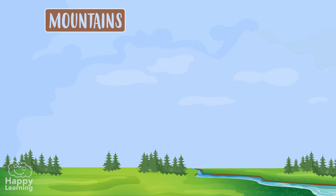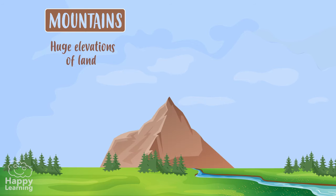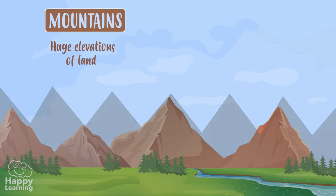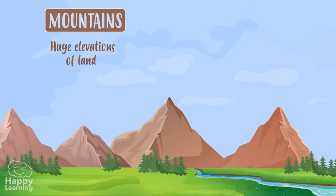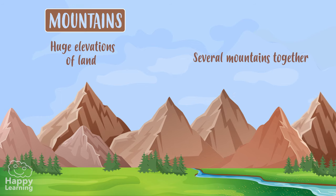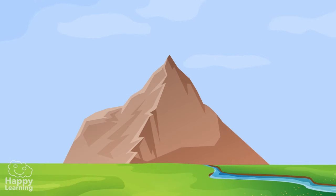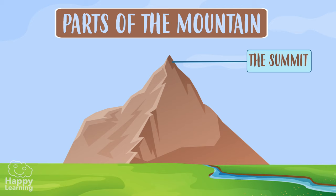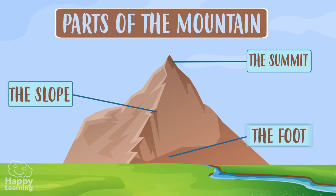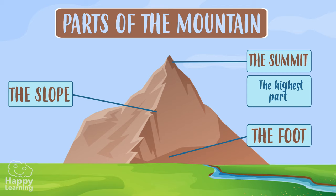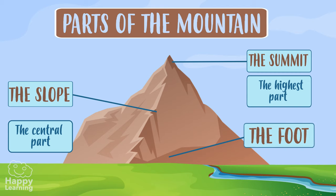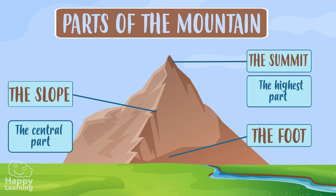We all know that mountains are huge elevations of land and they look rather like a saw, don't you think? Several mountains together form a mountain range. Mountains have three parts: the summit, the slope, and the foot. The summit is the highest part, the slope is the central part, and the foot is the lowest part of the mountain.